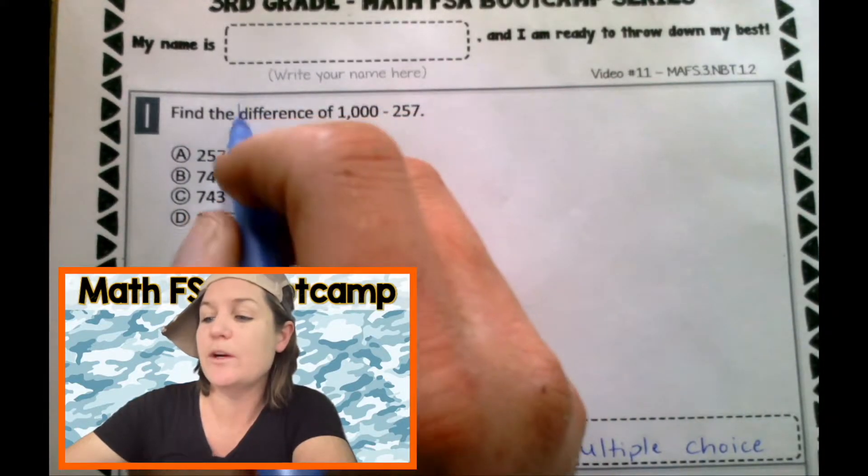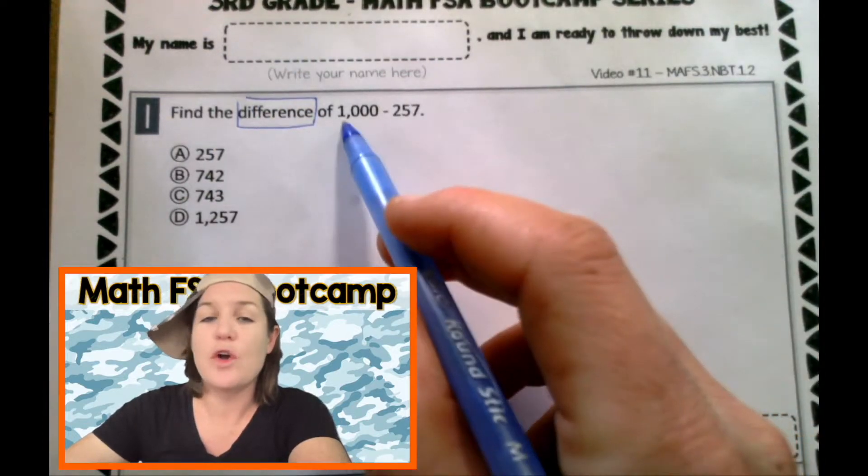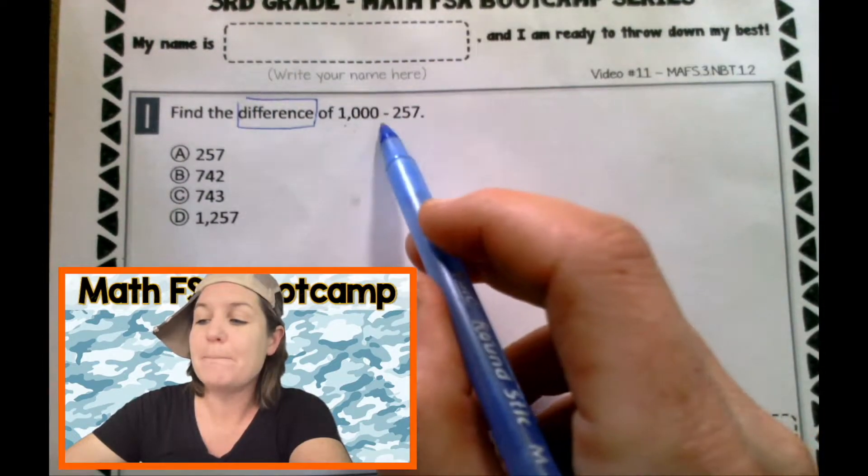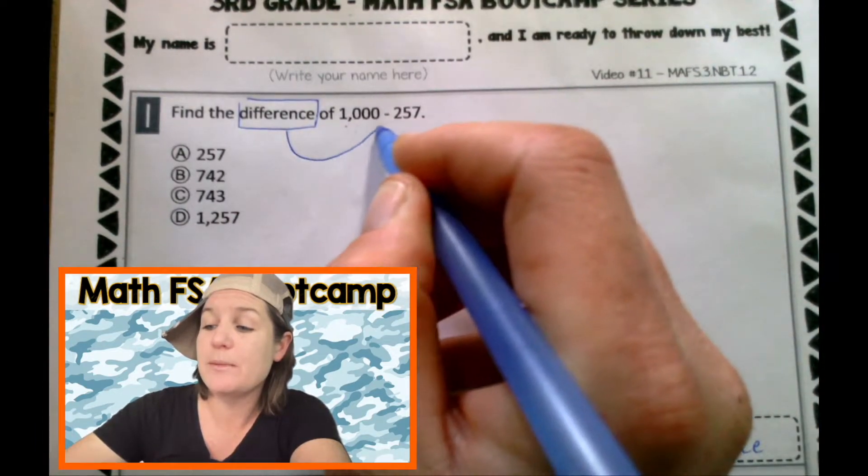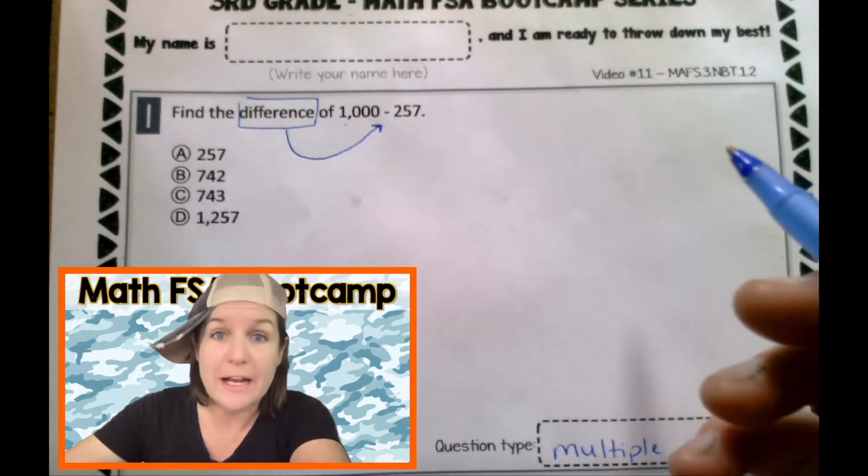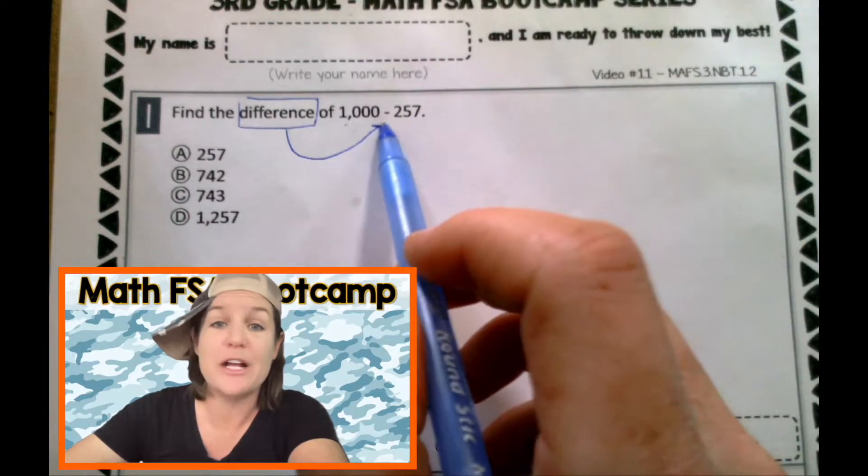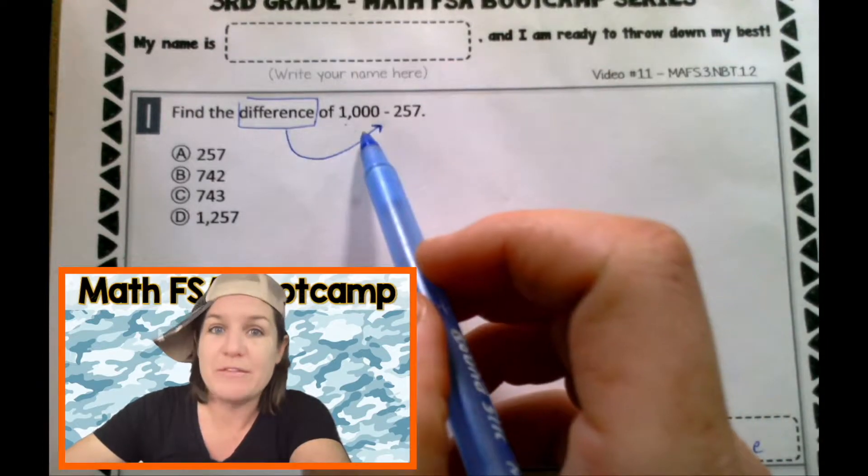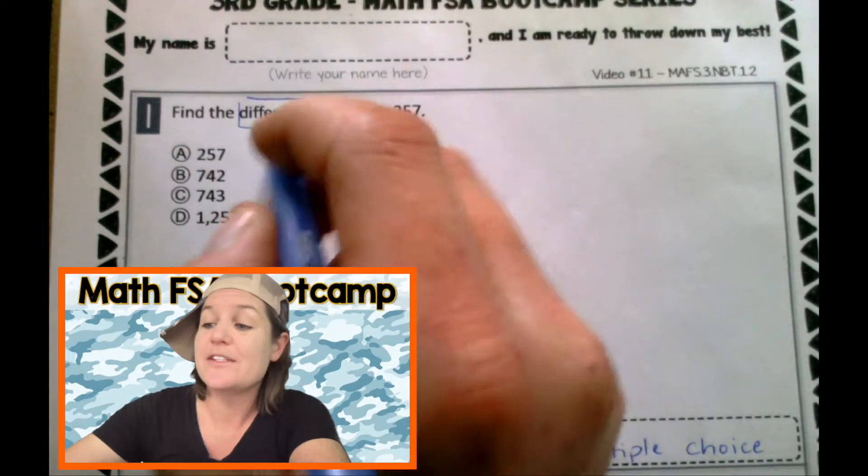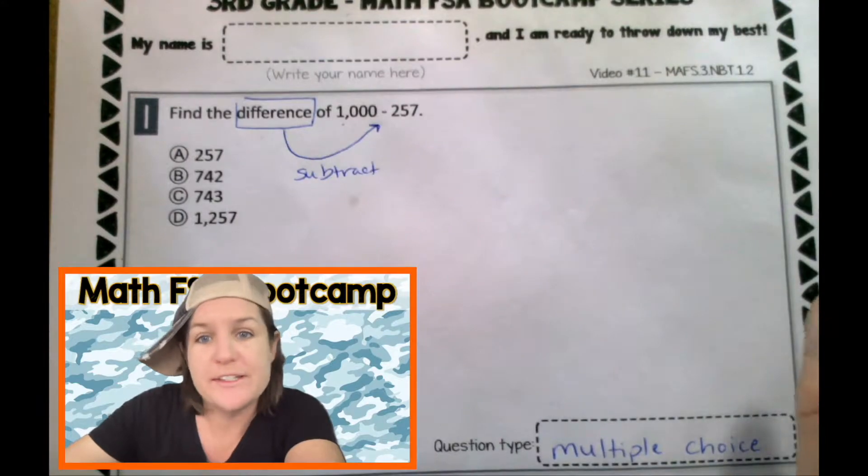Okay, now let's go ahead and read the question and mark up our text. It says find the difference. That's a keyword. Find the difference of 1000 minus 257. So actually difference here means to subtract. Sometimes they don't have a subtraction sign there, but they do say find the difference of the two numbers. And you have to know that difference means subtract.